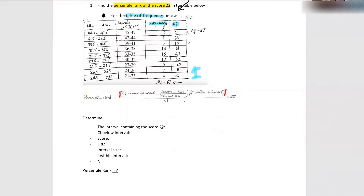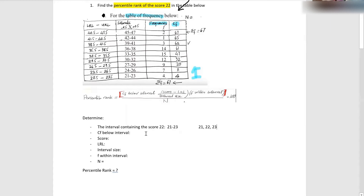What do you think? Good. If you look at the interval from 21 to 23, you can see that if you list all the numbers it's going to be 21, 22, and 23. So in that interval we can find the 22. That interval contains the 22. Okay, let's see the next one.